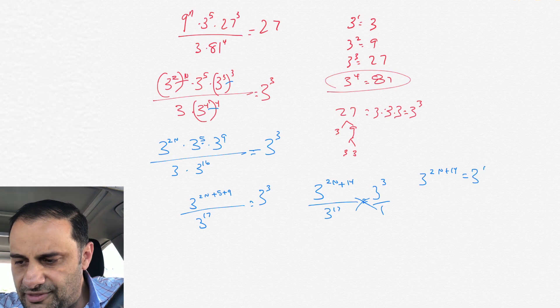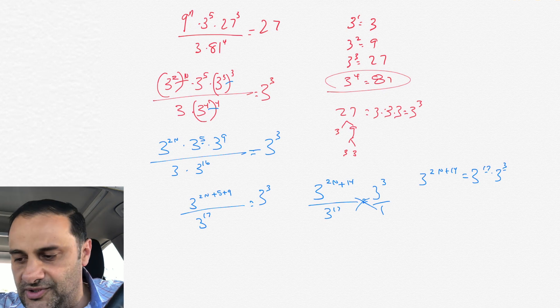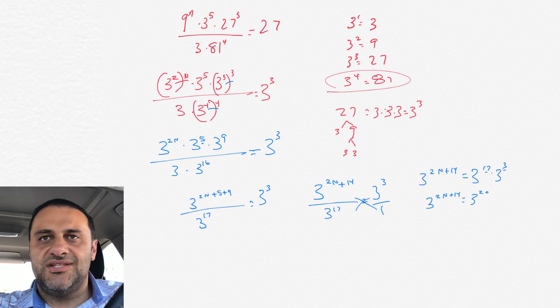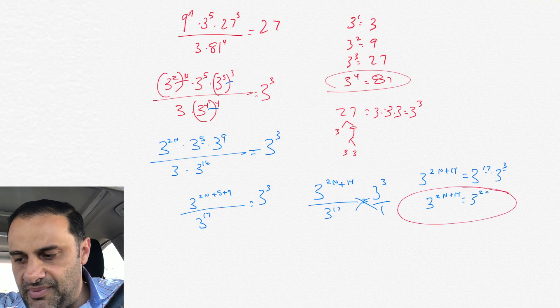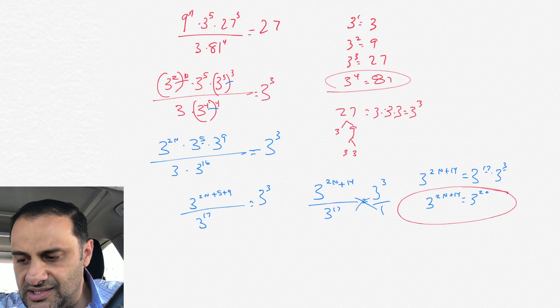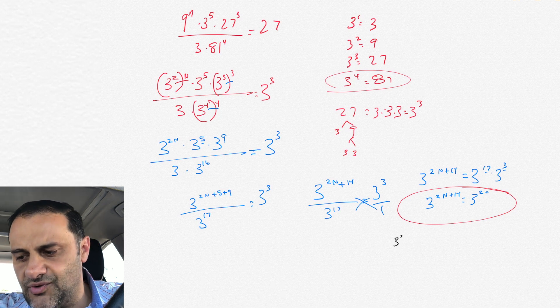Now we cross multiply, we got 3 to the 2n plus 14 equals, and I'm kind of doing this a little slower than you could probably do it. We have 3 to the 17 times 3 to the 3. Just to illustrate it, we add the 17 and 3, because it's not 3 to the 17 to the third power. It's 3 to the 17 times 3 to the third power, so we add 17 and 3, so then we get 3 to the 2n plus 14 equals 3 to the 20.